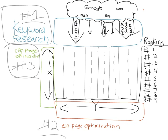So here's the biggest mistake most people make. Most people, when they do on-page optimization, they start out by picking some words that are related to their business. A lot of people pick the title of their company and stuff like that.